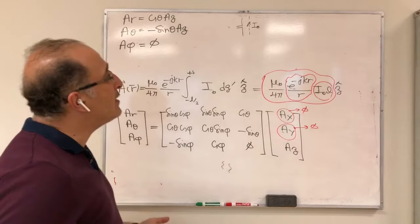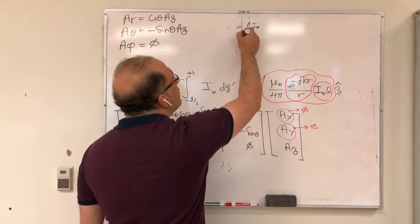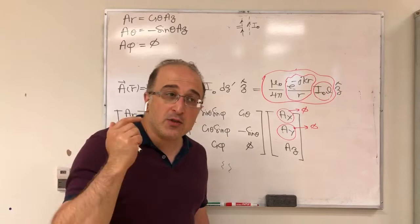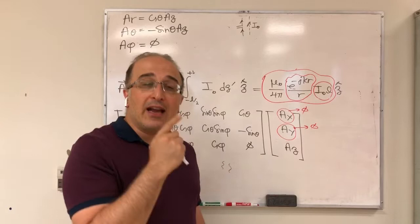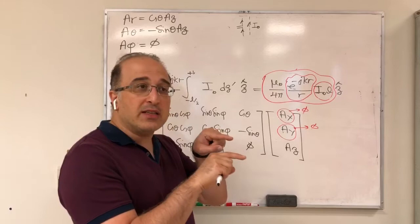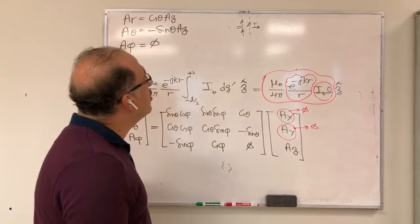I₀ is a phasor, so it has time variation. We emphasized that the currents are in phase on the two arms of the dipole — that's extremely important. That's why this antenna can radiate and a transmission line cannot. The transmission line had out-of-phase current; this one has in-phase current. That's the whole trick here.